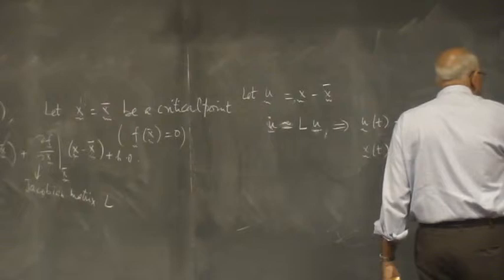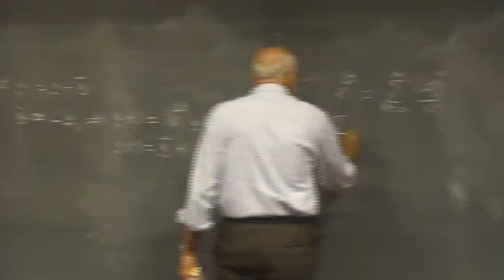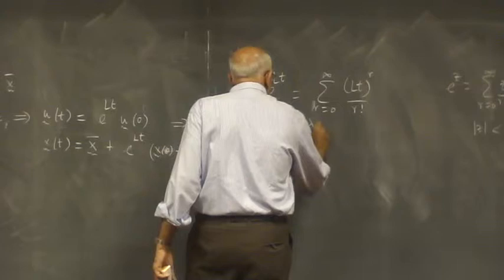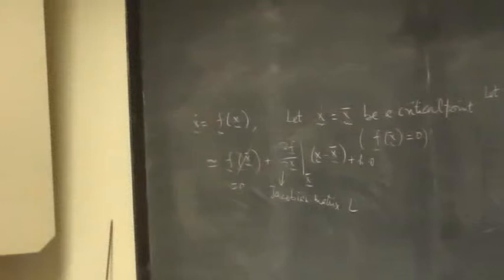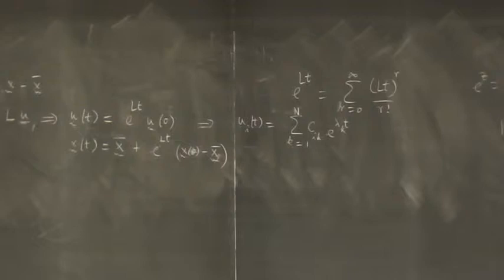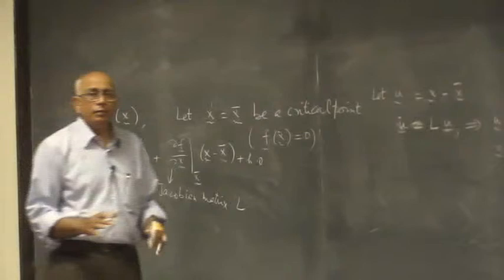So this x of t, or this u of t, implies that u_i of t equals sum from k equals 1 to capital N of all the eigenvalues, e to the lambda_k t, multiplying by some coefficients, let's call them c. This is what it's going to look like in general, provided the eigenvalues don't repeat themselves.